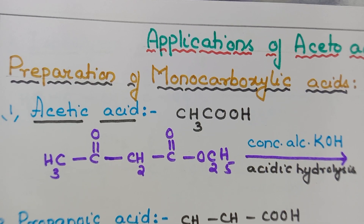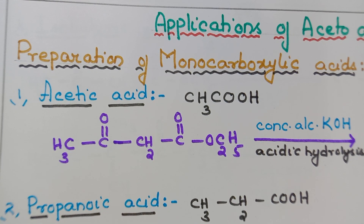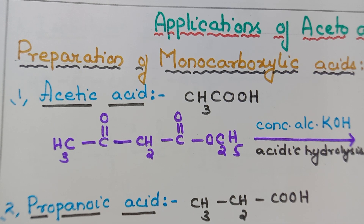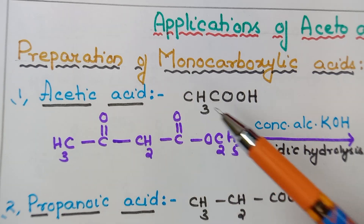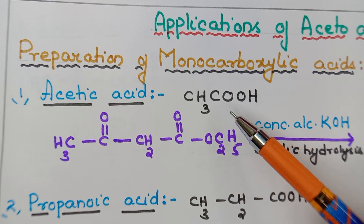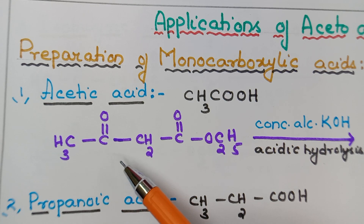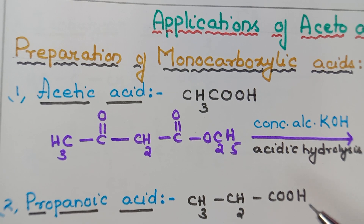Monocarboxylic acids are carboxylic acids containing one -COOH group. We will start with number one: acetic acid. You must all know the formula of acetic acid — it is CH₃COOH. Write the side heading 'Acetic Acid' and its formula. To start with, we need to take acetoacetic ester: CH₃-C(=O)-CH₂-C(=O)-OC₂H₅.